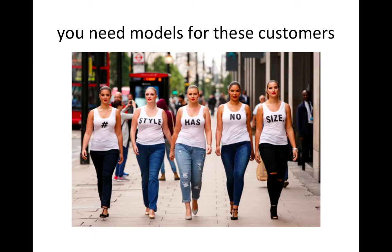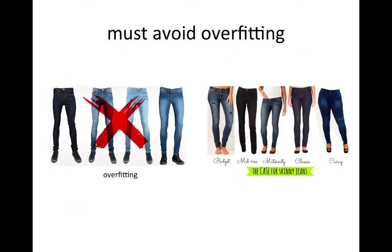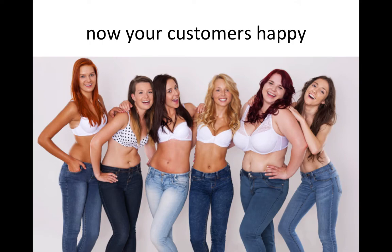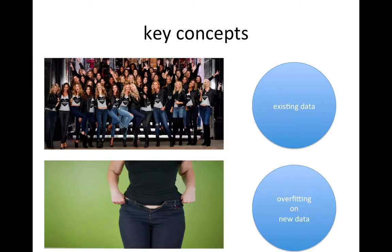Your jeans were too biased to be loved by customers. You now hire mid-size, maturity, curvy models, and trained designers and engineers to build skinny jeans for all your customers. You may already know what I'm trying to talk about. The previous situation is what we call overfitting in machine learning. Now you have skinny jeans for all types of your customers, and your customers are happy. Seems like you're predicting well with all types of customer size.